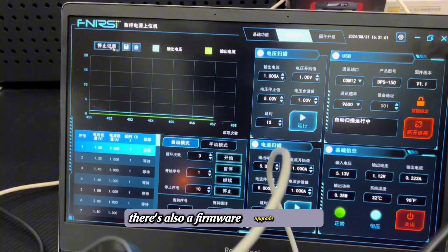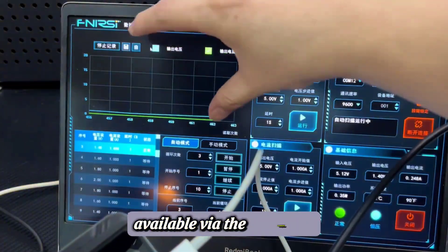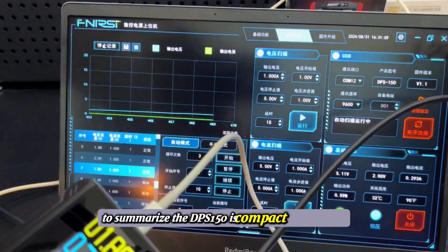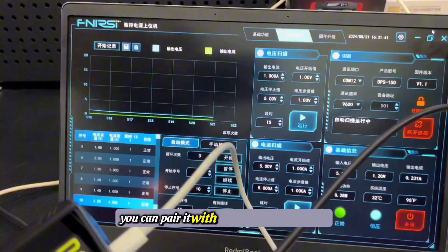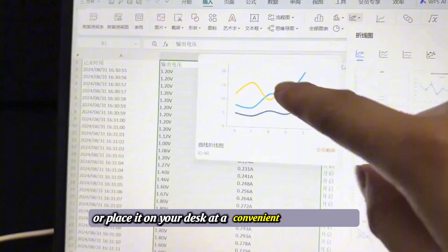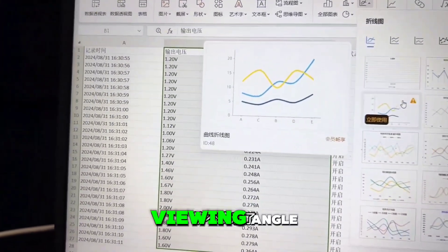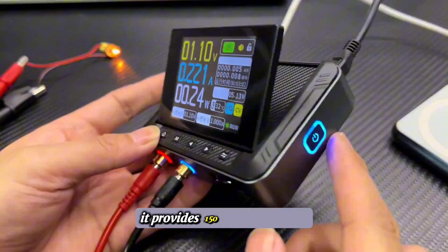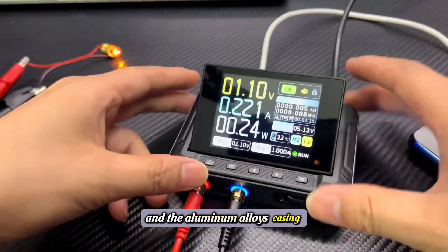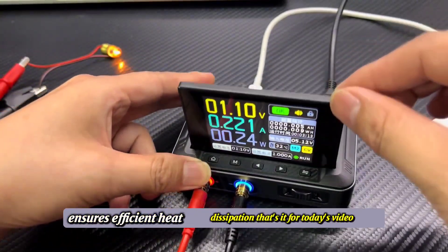There's also a firmware upgrade option available via the computer. To summarize, the DPS150 is compact yet powerful. You can pair it with a portable power bank for easy transport or place it on your desk at a convenient viewing angle. It provides 150 watts of power with short circuit protection and the aluminum alloy casing ensures efficient heat dissipation.